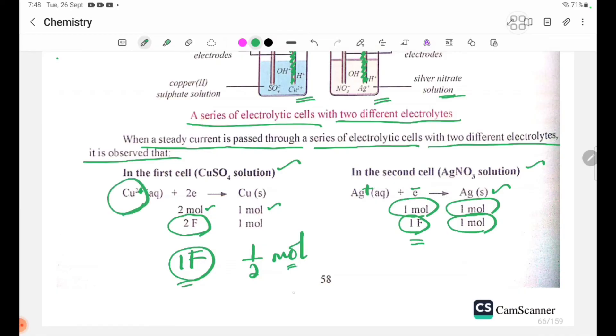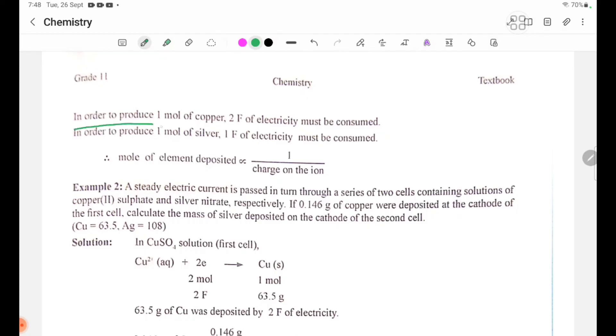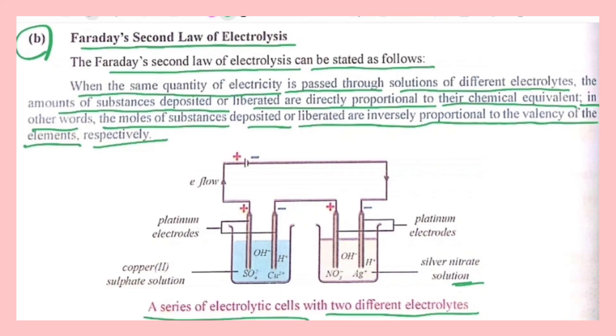In order to produce one mole of copper, 2 Faradays of electricity must be consumed. In order to produce one mole of silver, 1 Faraday of electricity must be consumed. Therefore, moles of element deposited vary inversely with charge on the ion.